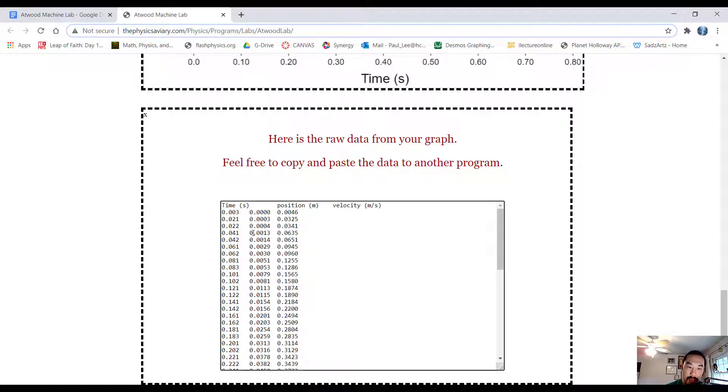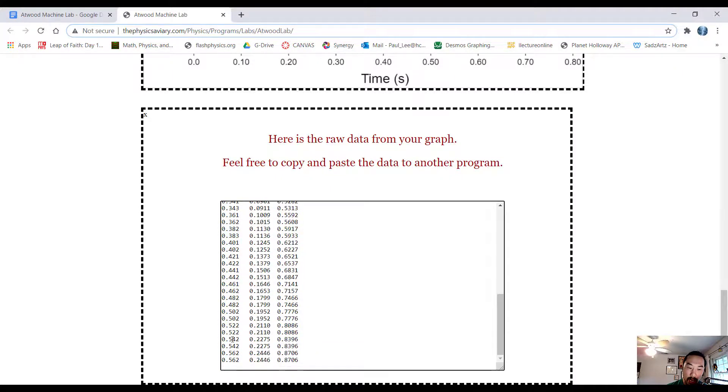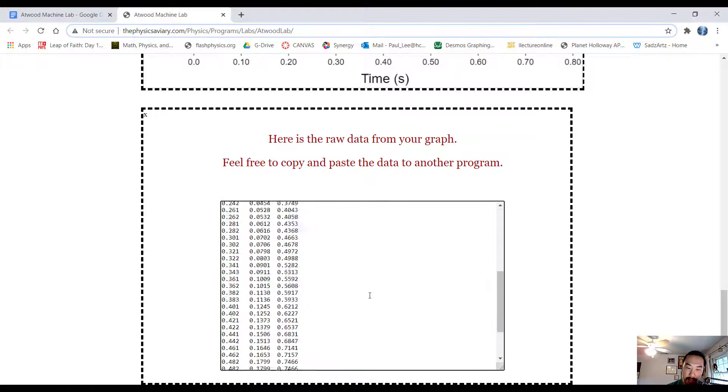So what this means is that at time 0.03, it was at position 0.0 with a velocity of 0.046. Okay, so it was just starting to move. And we can see how as time moves on, the position changes and the velocity also changes.